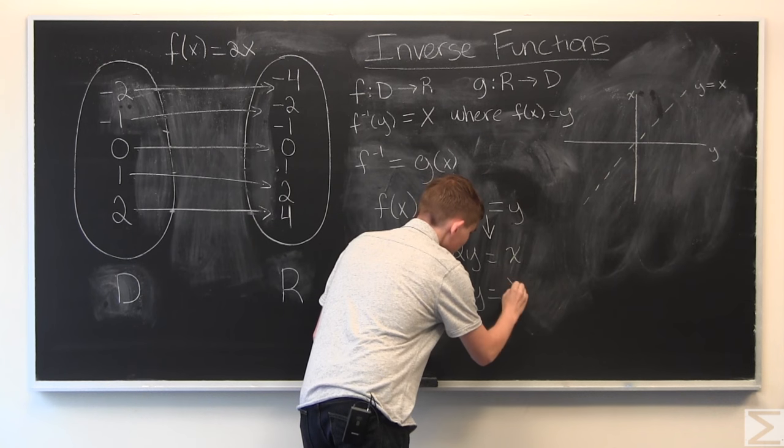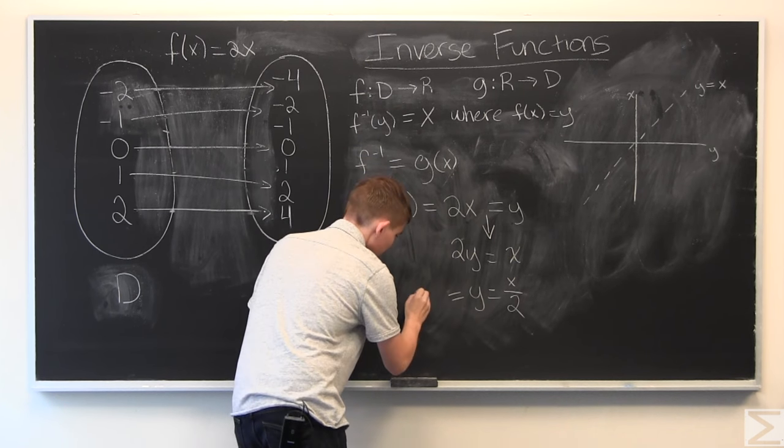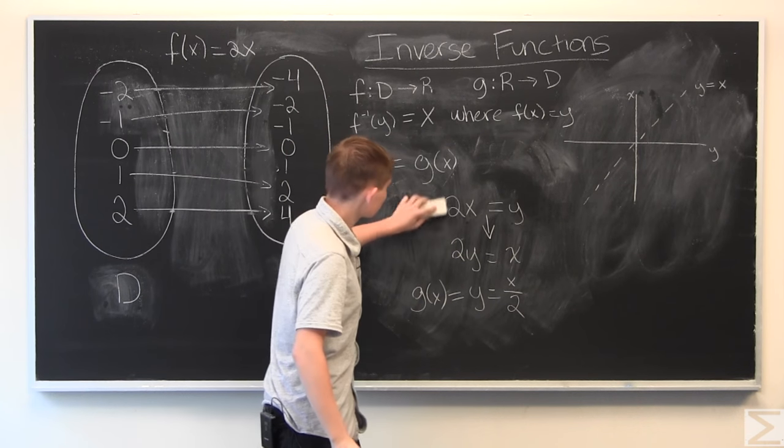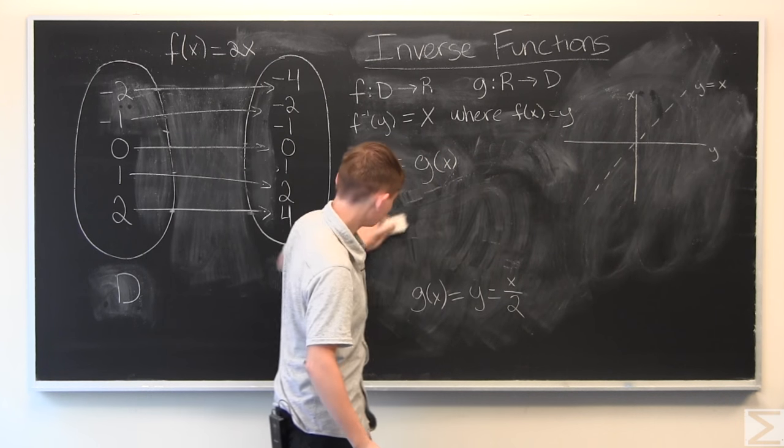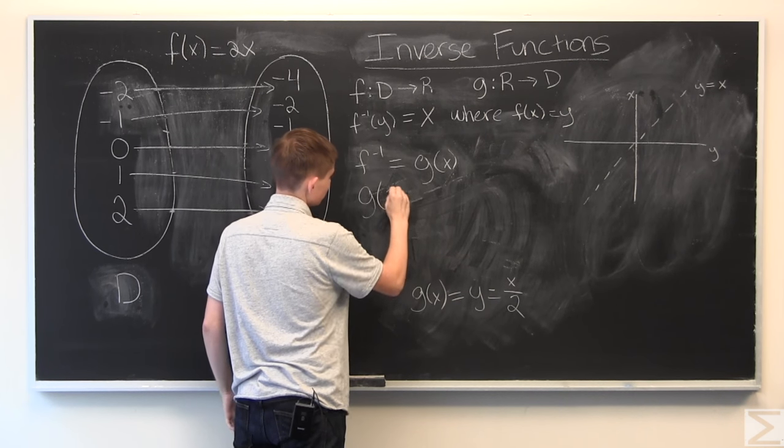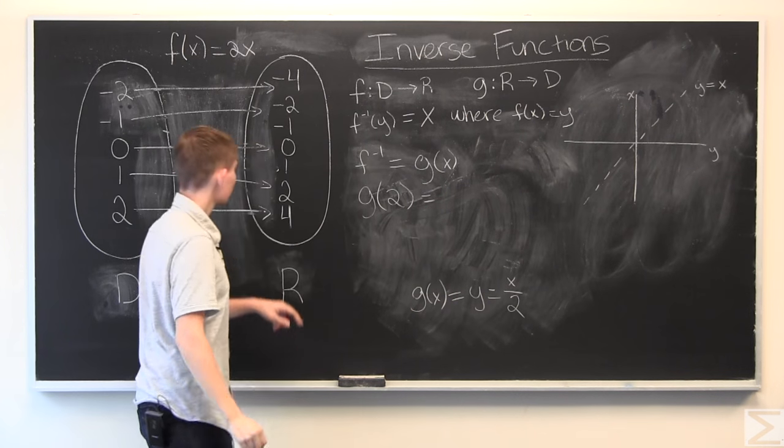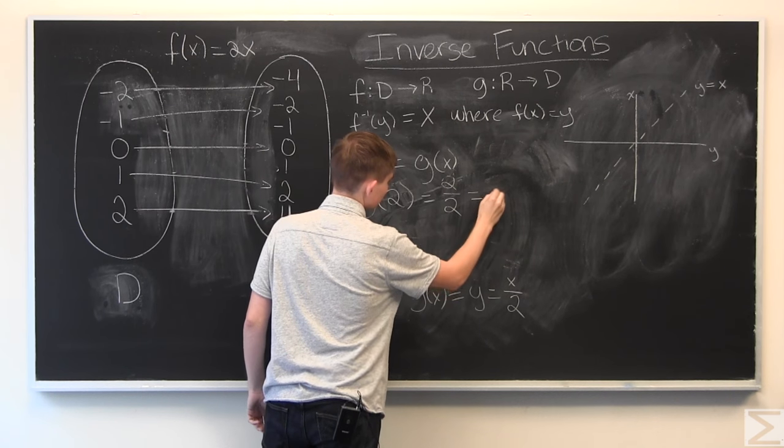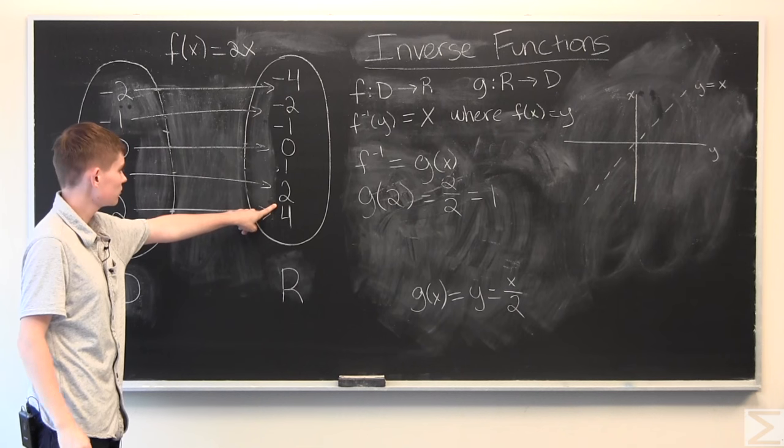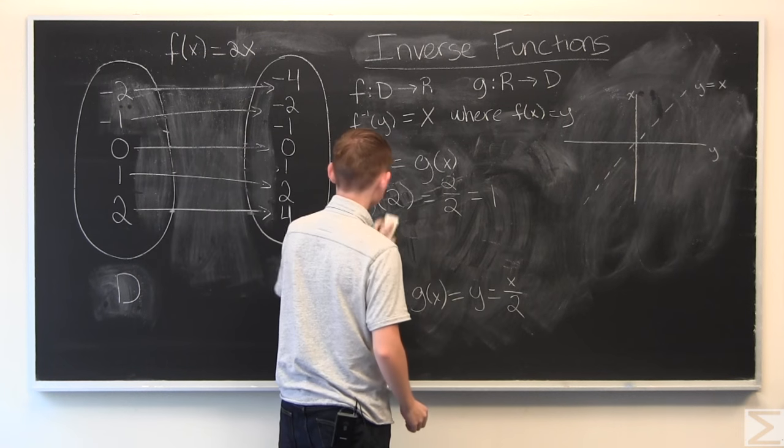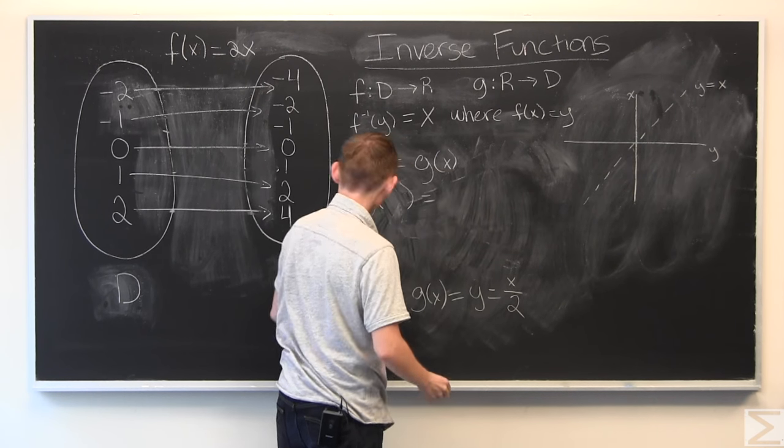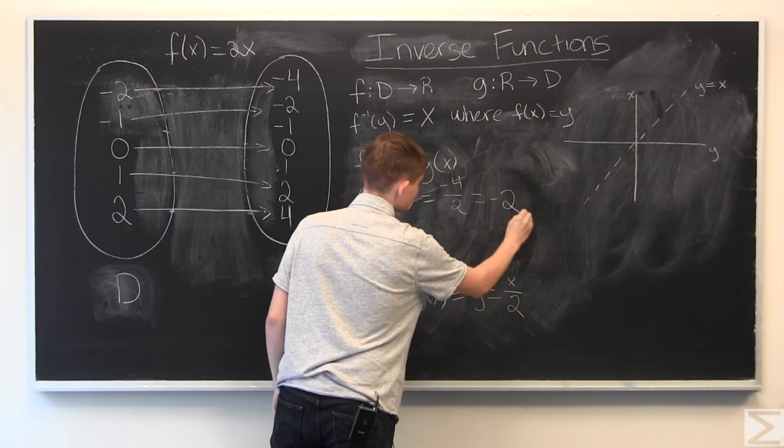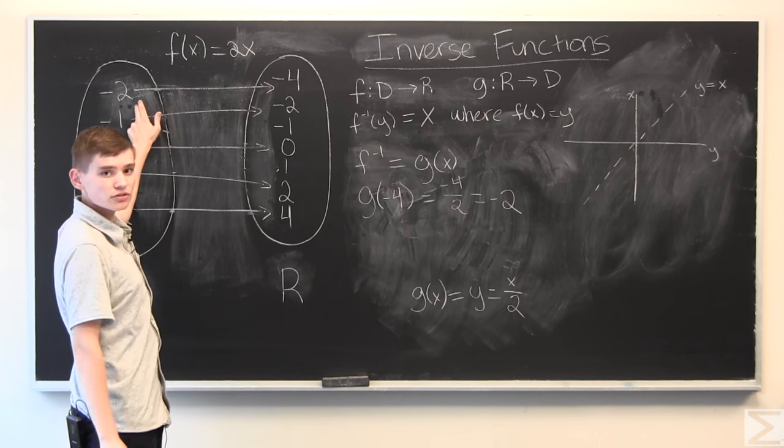So, easy enough. And so, this is g of x. So, let's test it to make sure we did it right. So, g of 2. Let's see. So, we take 2 over 2, and we get 1. And if we follow our mapping, 2, we end up back at 1. And we can do the same thing with, say, our original one, negative 4. Negative 4 over 2 is negative 2. And we find negative 4, we get back to negative 2.